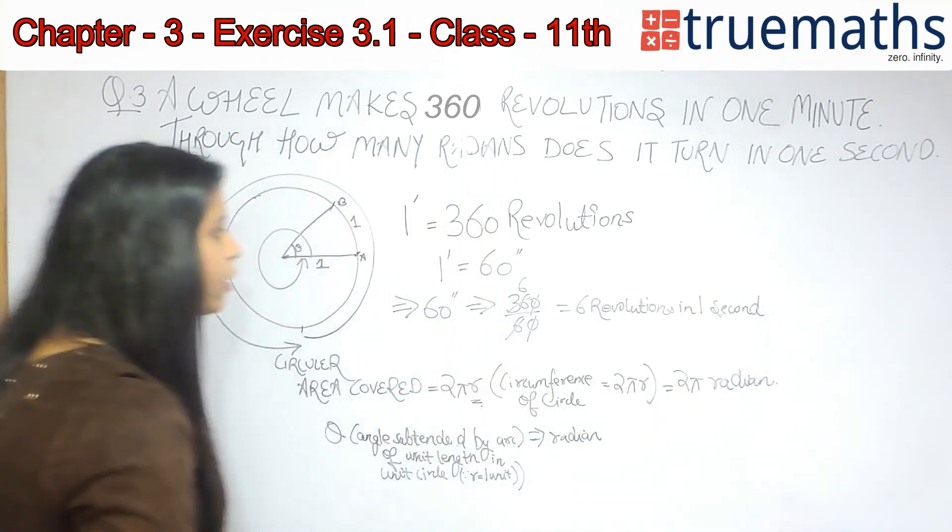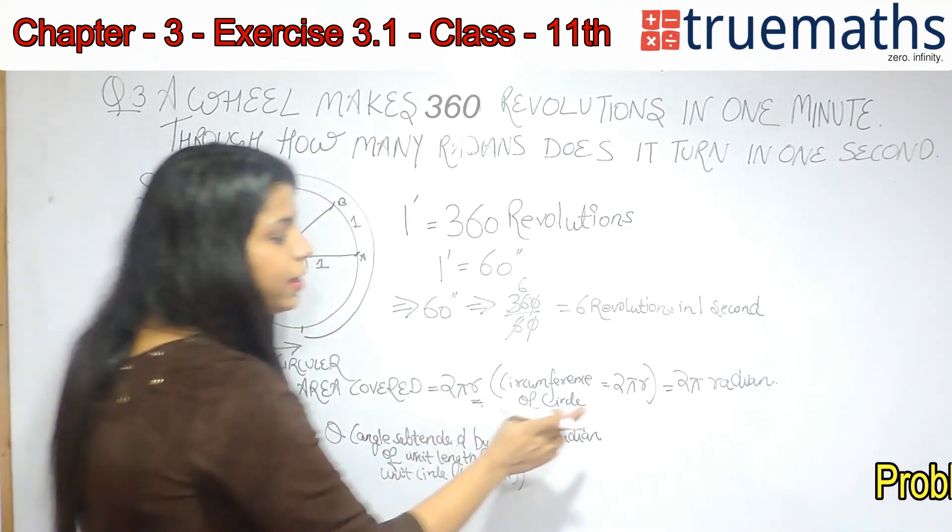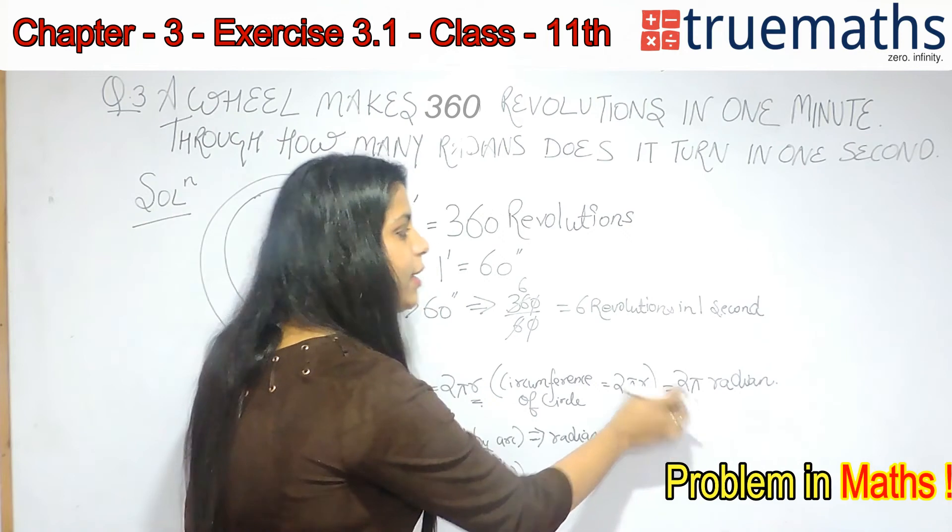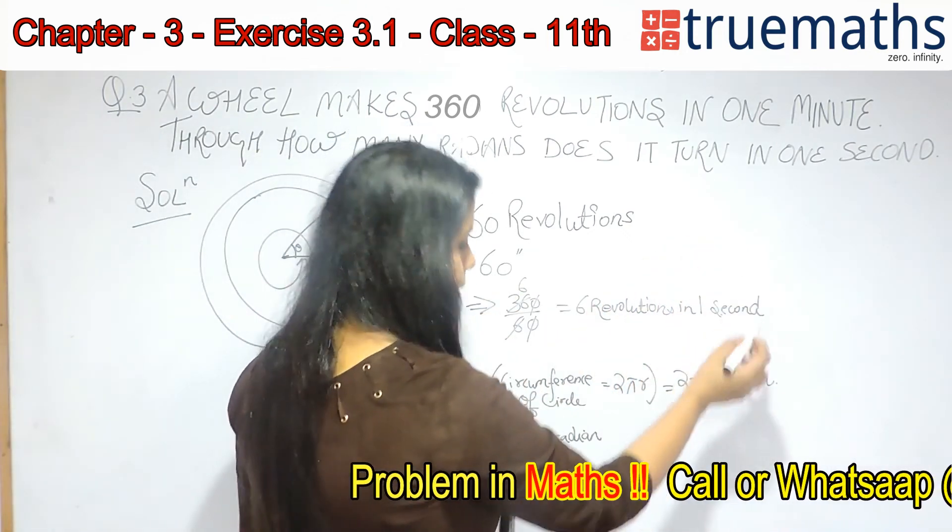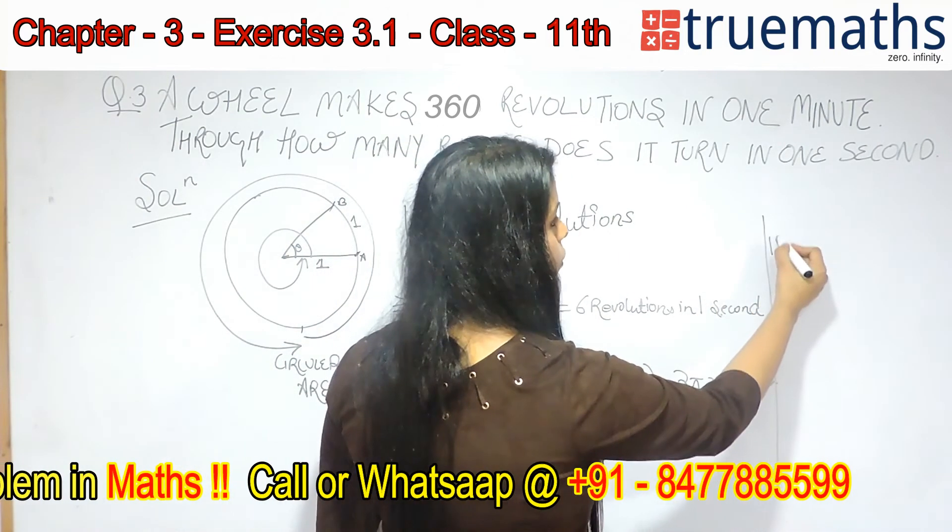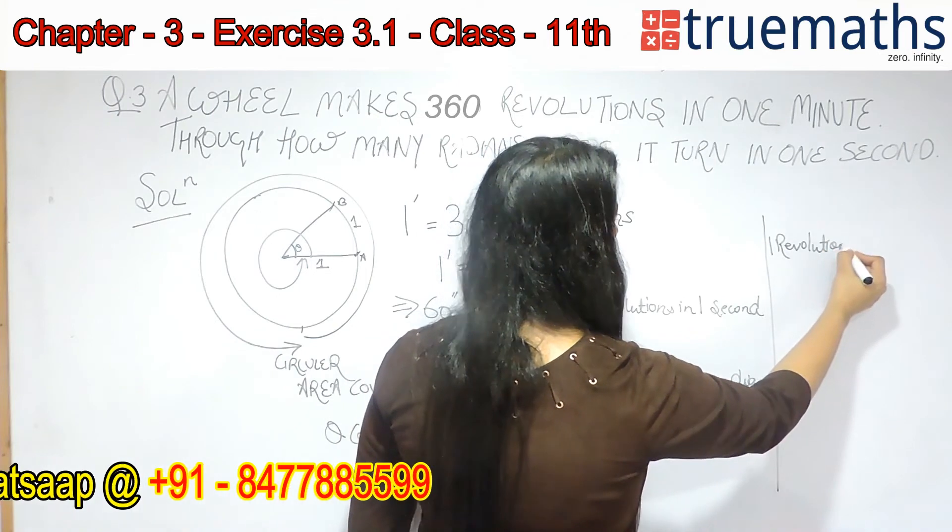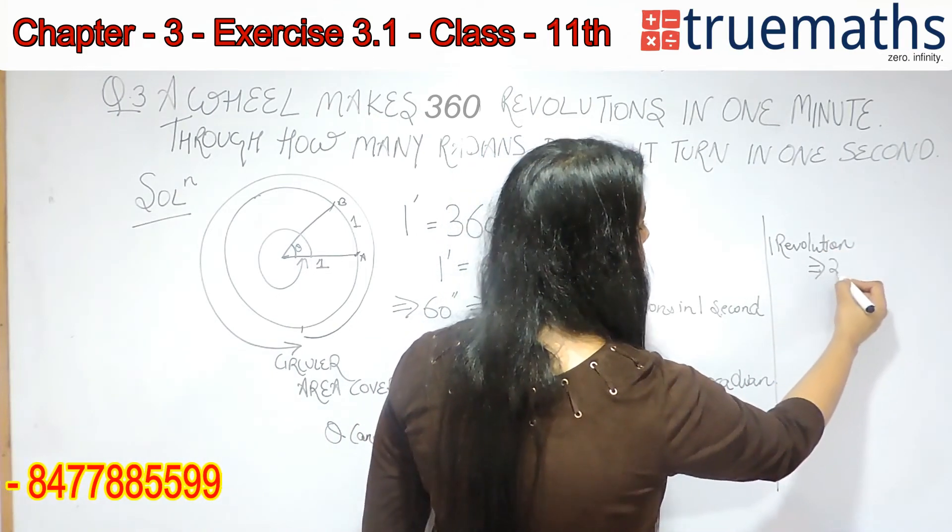Now, in 1 complete revolution, the wheel is covering an angle of 2π radians. Thus, I can say that here, 1 revolution, the wheel is covering 2π radians.